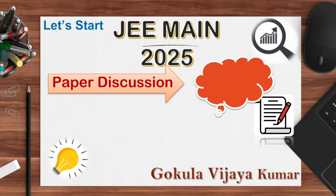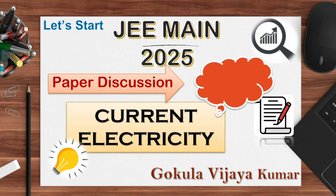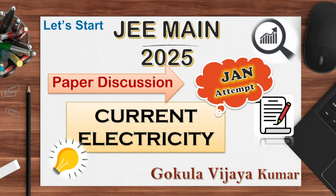Hello students. Today we are going to see JEE Main 2025 questions from the most important chapter — current electricity, January attempt. Most of the questions are from combination of resistance, and we are going to see all the questions in detail.